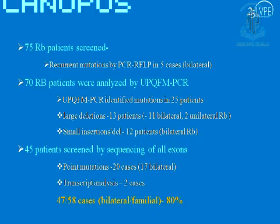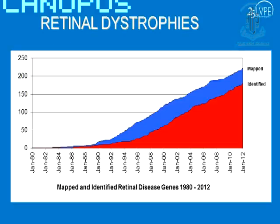In a study on a good number of retinoblastoma patients, we used a multi-step approach to look at deletions and small changes. We found all different kinds of mutations — patients with very large deletions, patients with much smaller deletions, and various other mutation types. In bilateral and familial cases combined, we were able to identify mutations in about 80%, which is reasonably good, though it could potentially be higher.